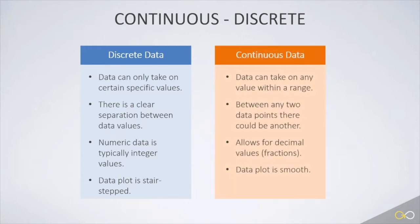In contrast, continuous data can take on any value. Between any two continuous data values, there is the ability to have another value. Often, the data is represented in decimals or fractions rather than integers, and a data plot will have a smooth curve rather than the stair-step effect with discrete data.